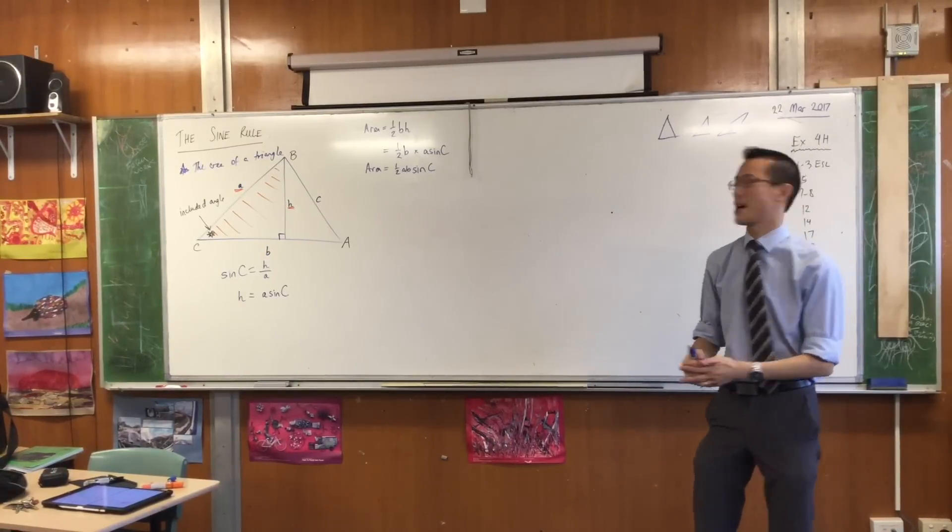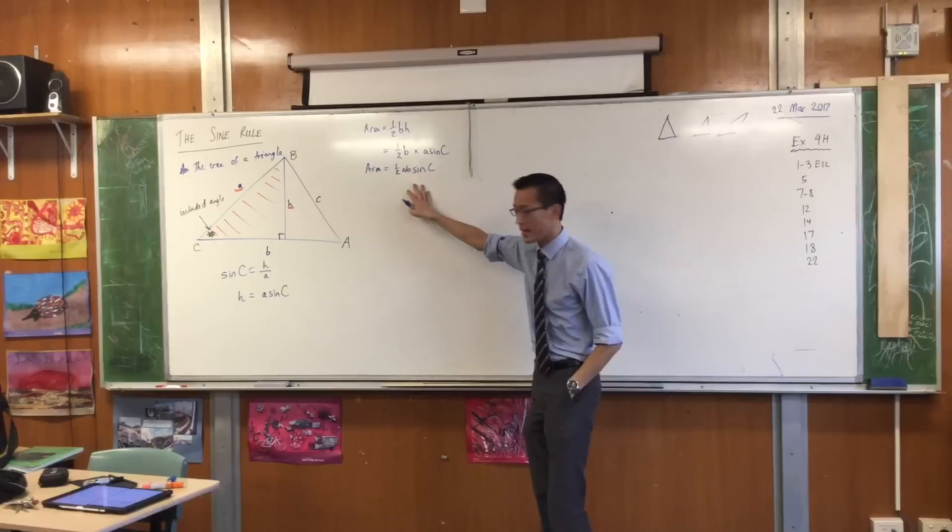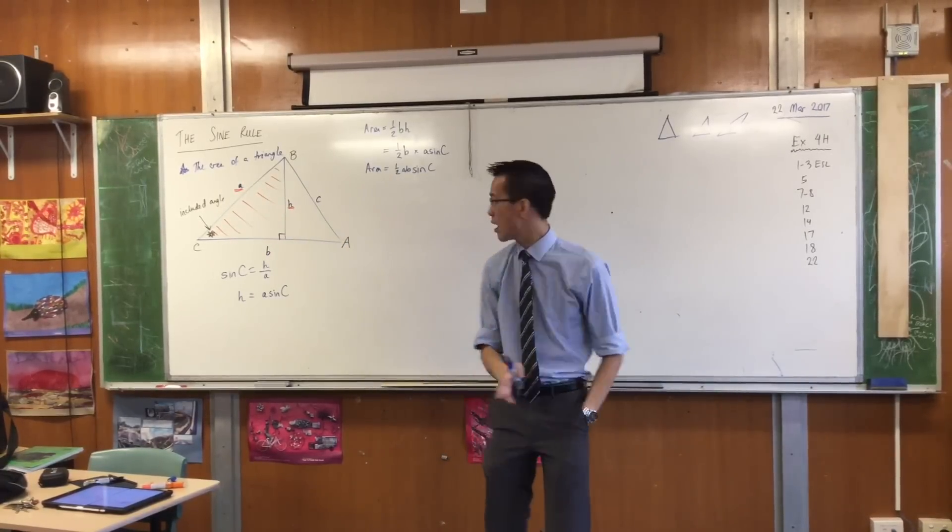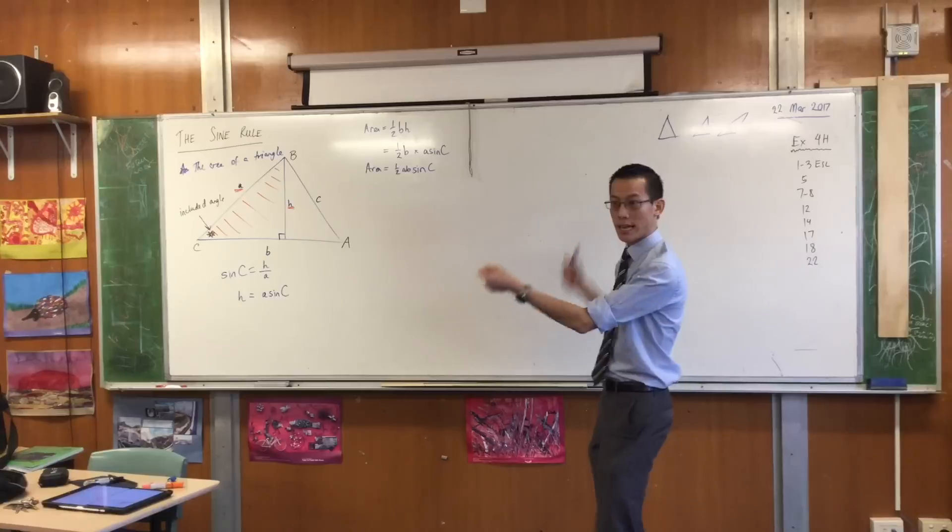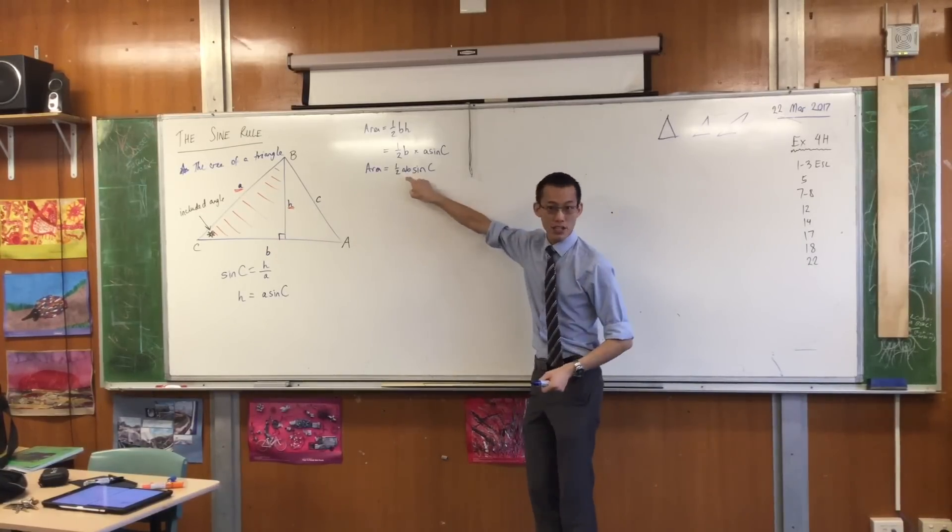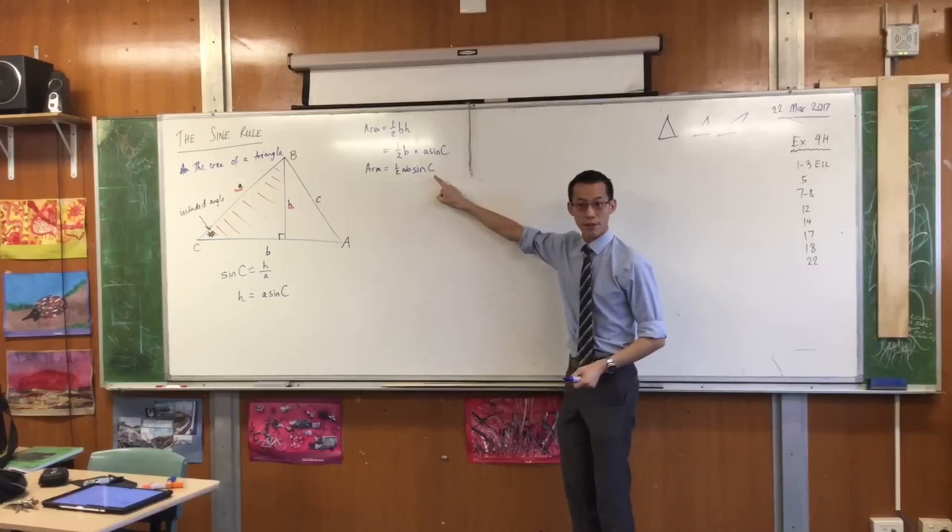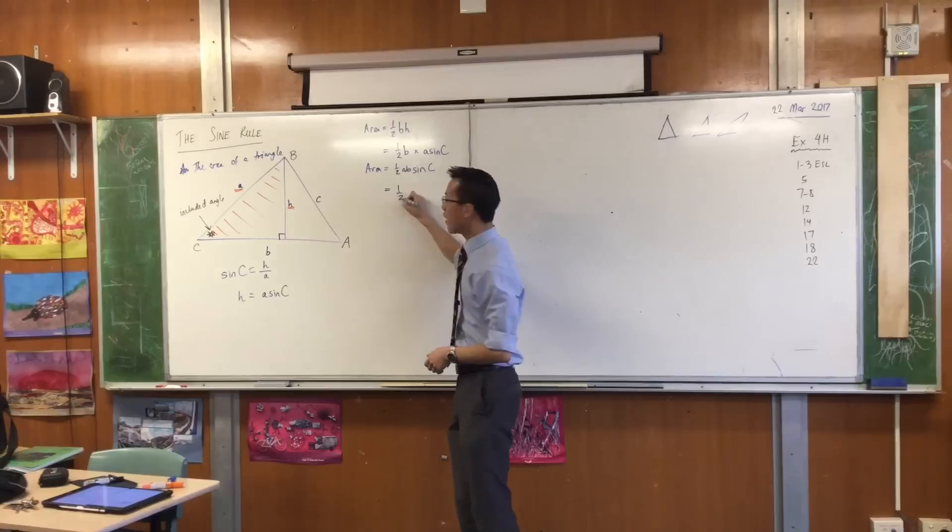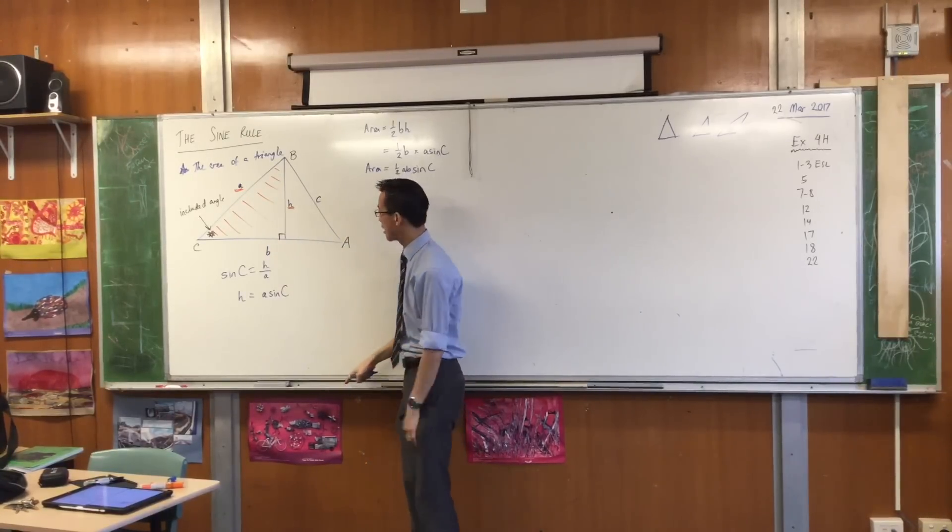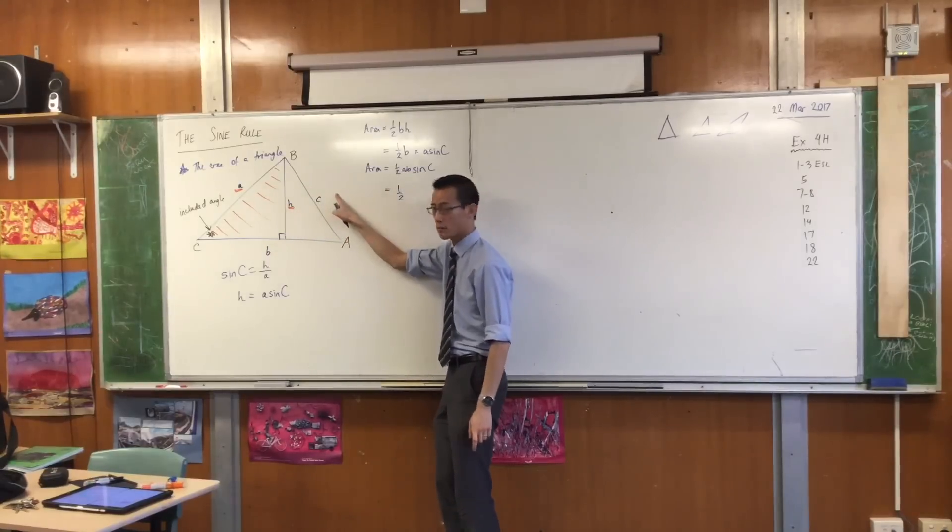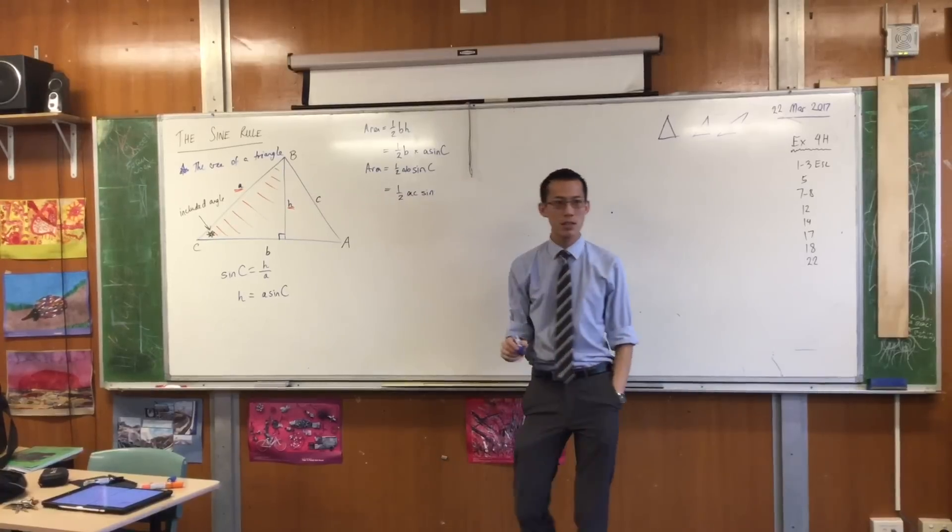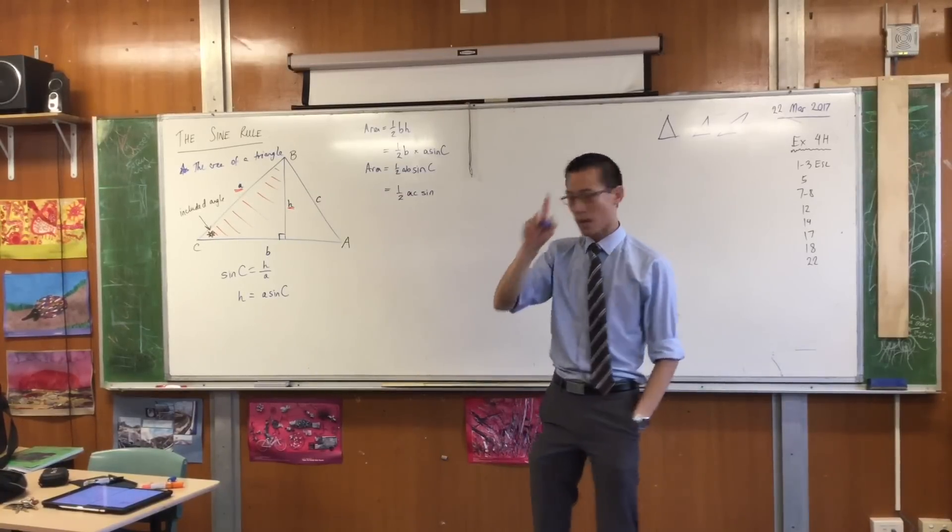Now here's where we get to the sine rule. What I love about this formula is, I started looking at this side and this side, but I didn't have to. I could rearrange all of the letters, or I could construct a different altitude, and I would get a different combination of sides, and therefore a different angle. For instance, if I didn't choose A and B, if instead I chose A and C, I would write not this, but half A, C, sine, what's the included angle? It's B, up the top there.